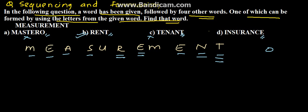And the last one is insurance. We do not have I. So insurance cannot be formed. So we can say that only rent can be formed.